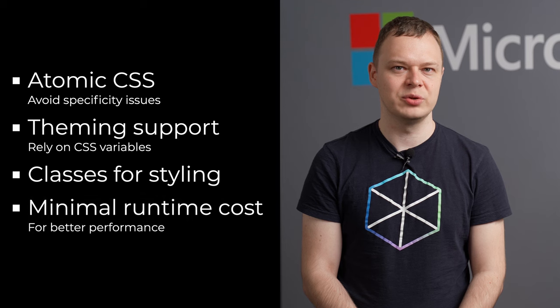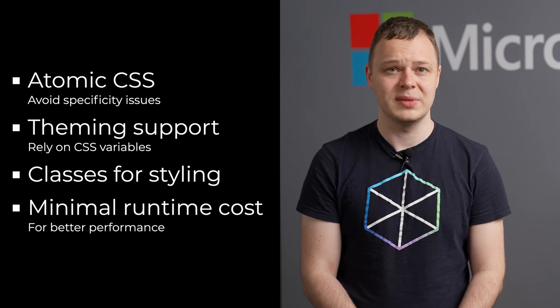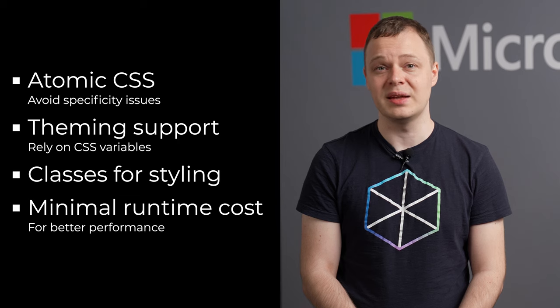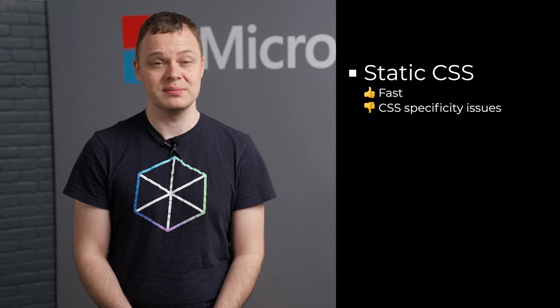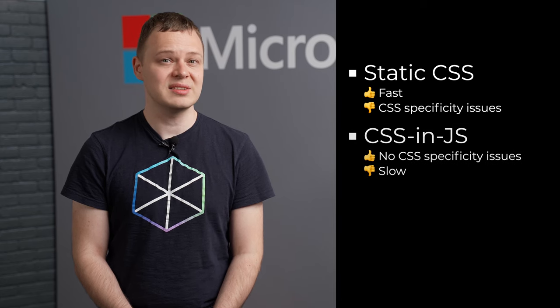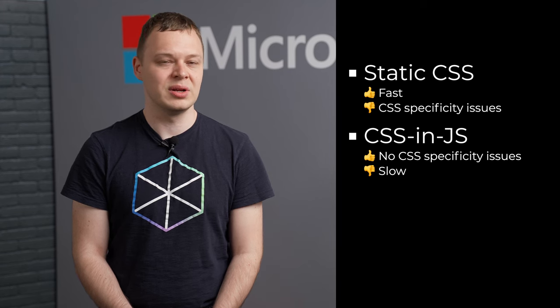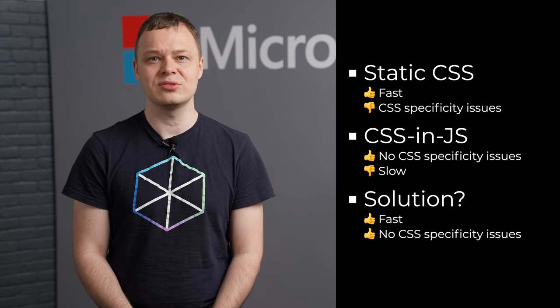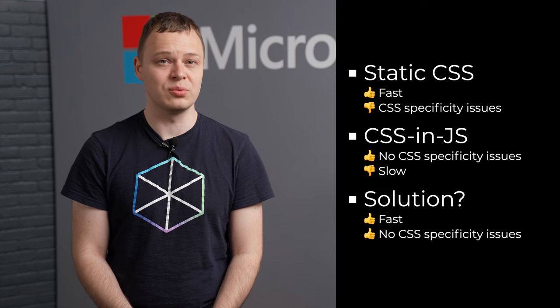Minimal runtime cost for performance. We have smart styling libraries and they do a lot of good work. The problem is that they do it at runtime, and our customers are the ones who pay performance penalties for it. Let's summarize existing options. We have static CSS — it's fast, but cannot be used because of CSS specificity issues. CSS-in-JS solves specificity issues, but at a price of high runtime performance cost. What if we could combine benefits of both? Use CSS-in-JS, but minimize runtime cost by doing the most expensive work at build time.